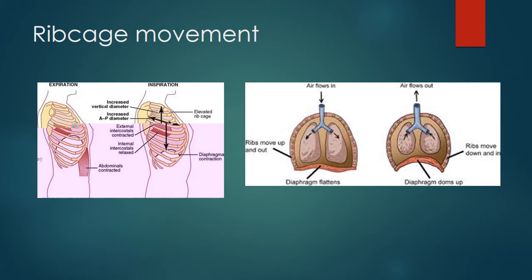The opposite happens when you breathe out deeply. The external intercostals relax and the internal intercostals contract, pulling the ribs down and in. At the same time, the diaphragm muscles relax and the diaphragm returns to its normal domed shape. The volume of the thorax decreases and the pressure rises slightly above atmospheric pressure, forcing air out of the lungs. Exhalation is also helped by the fact that the lungs are elastic, so they tend to collapse and empty like a balloon.